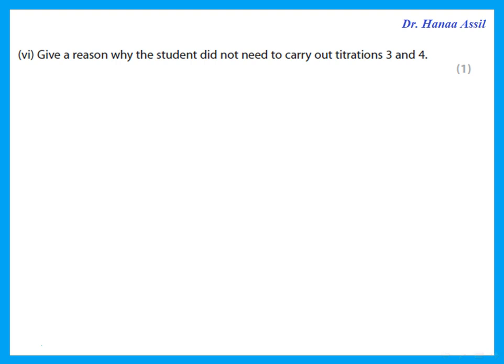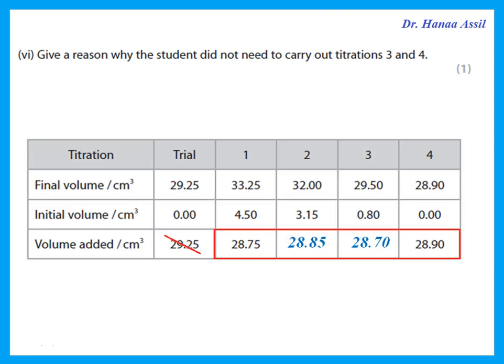Give a reason why the student did not need to carry out titrations 3 and 4. The student should have stopped after experiment 2 — titrations 1 and 2 were already concordant, so there was no need to continue.